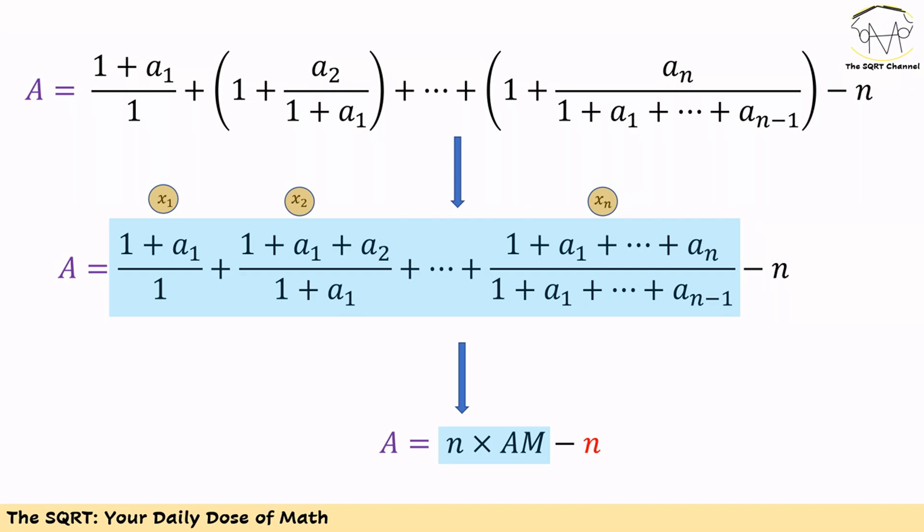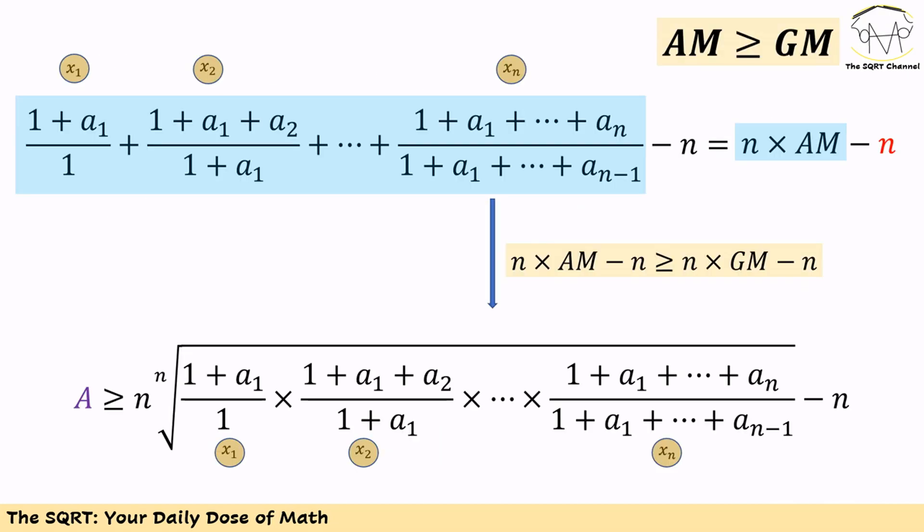Remember we have AM is greater than or equal to GM. If each term here is an xi, then we can simplify this and write n times AM minus n is greater than or equal to the GM of these values, which is the nth root of each of these terms multiplied, times n, and at the end we have minus n again.